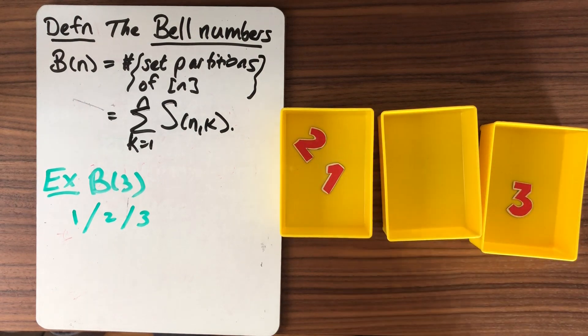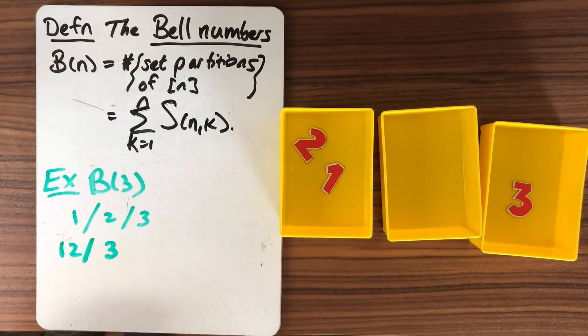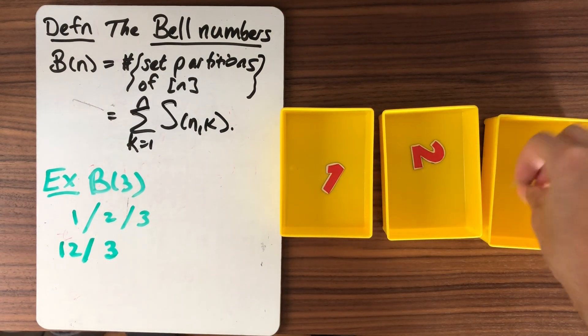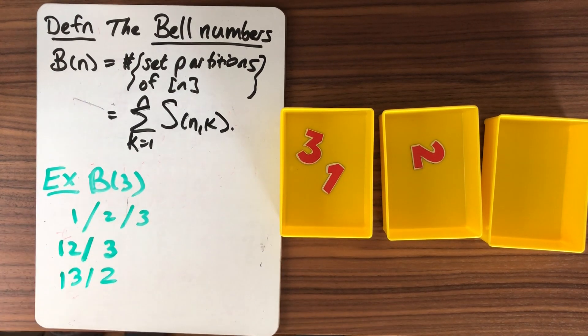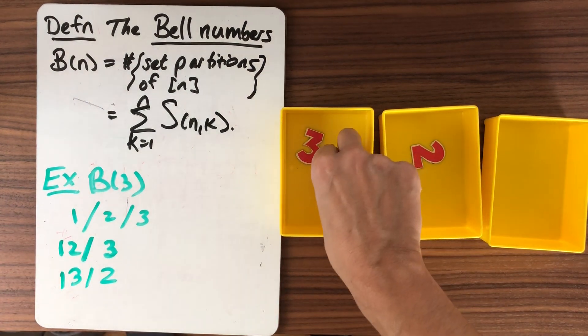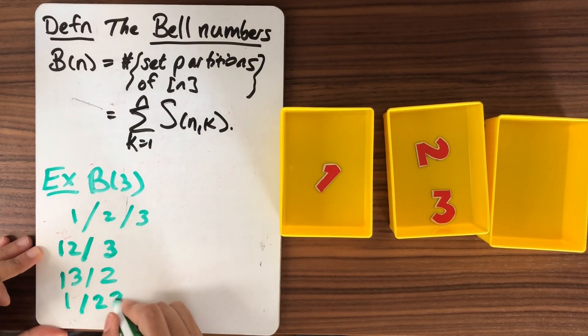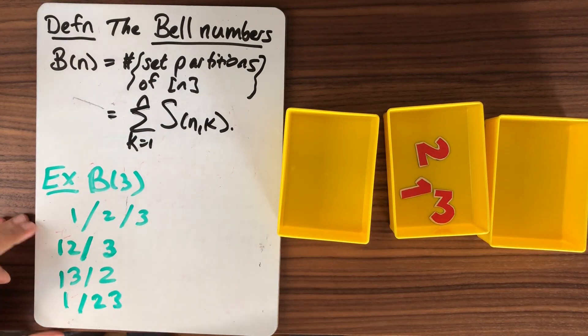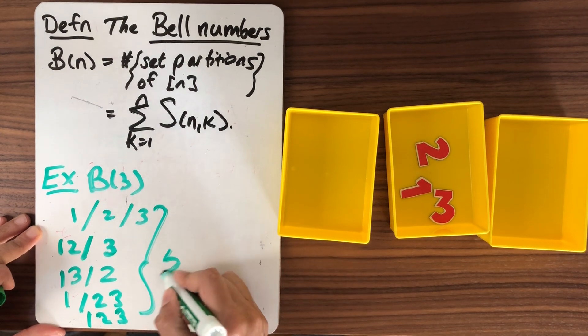So here's one thing that I could do. I could put each number in its own block. So that would be, I'll maybe denote with slashes when they're in different blocks. So there's one arrangement. Here's another thing. I could put 1 and 2 together and leave 3 by itself. Or I could put the 1 with the 3 and leave the 2 by itself. Or I could put the 2 and the 3 and leave the 1 by itself. And of course, I could just stick them all in the same box. So I get the box 1, 2, 3.